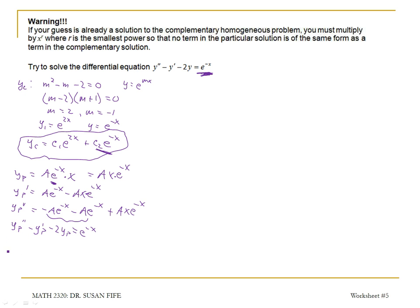So my YP double prime is, when I combine these two first terms, I get negative 2A E to the negative 2X. E to the negative X. Plus AX E to the negative X.